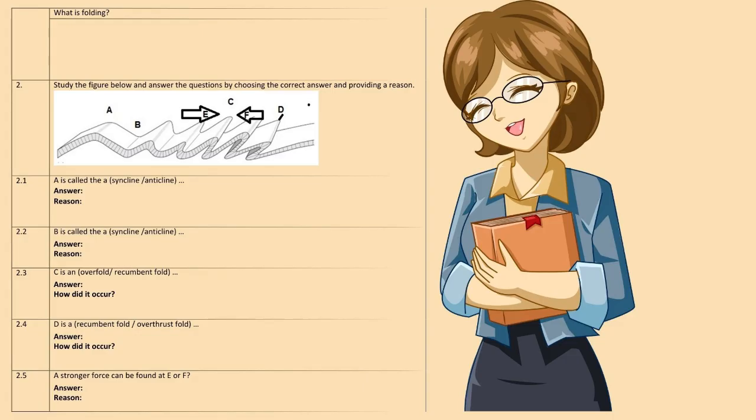Assessment questions: 1. What is folding? 2. Study the figure below and answer the questions by choosing the correct answer and providing a reason. 2.1: Is 'a' a syncline or anticline? 2.2: Is 'b' a syncline or anticline? 2.3: Is 'c' an overfold or recumbent fold? How did it occur? 2.4: Is 'd' a recumbent fold or overthrust fold? How did it occur? 2.5: Can a stronger force be found at 'e' or 'f'?